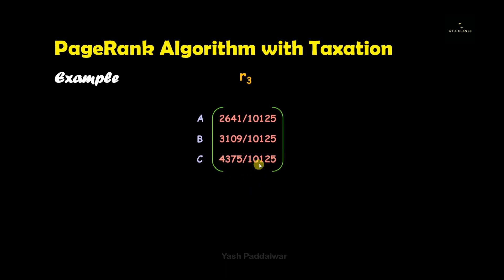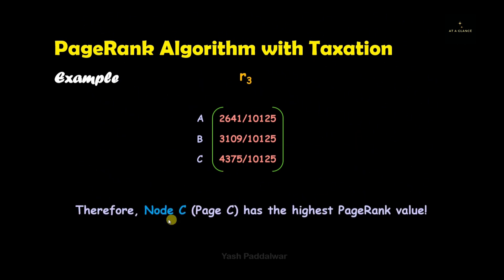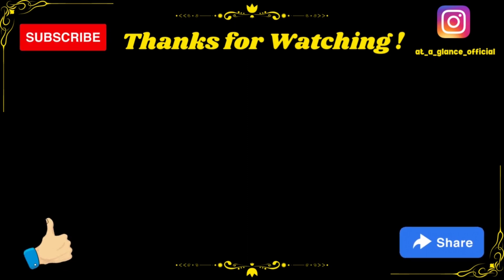The maximum value in the final r3 vector is 4375/10125, corresponding to node C. Therefore, web page C has the highest page rank, meaning it is the most relevant and important web page — calculated using the PageRank algorithm with taxation or damping factor. If you have any doubts, post them in the comments. Don't forget to subscribe, like, share, hit the bell icon, and follow me on Instagram. Thanks for watching.